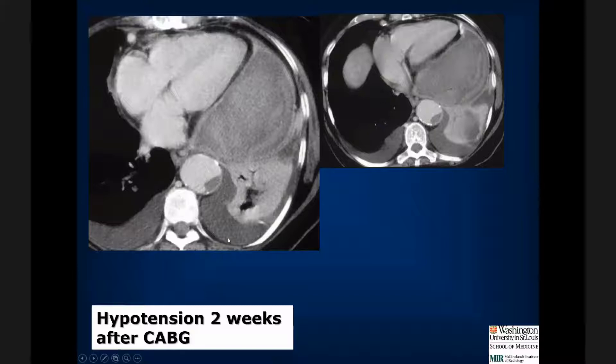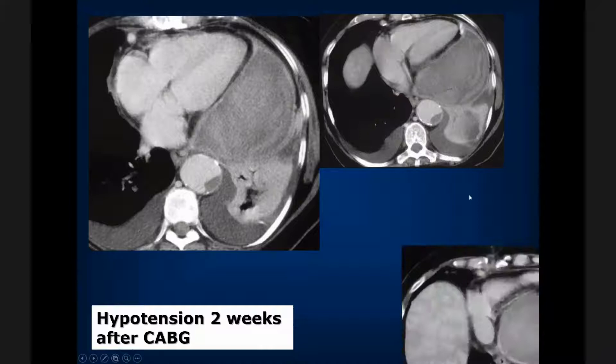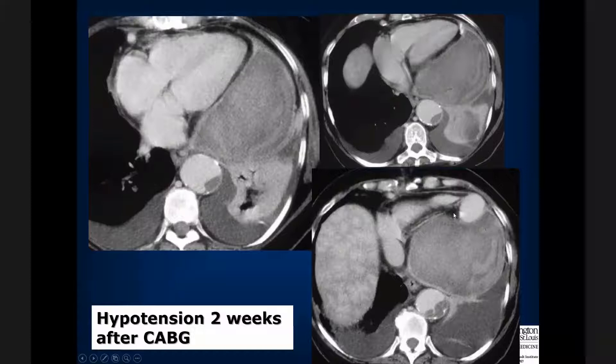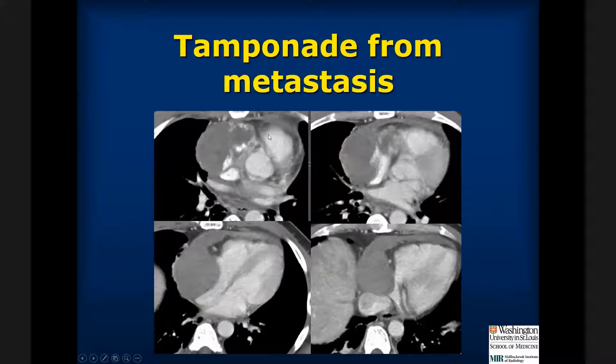Another patient status post CABG went home, was doing okay, and came back two weeks later with hypotension. There is a loculated collection posteriorly with enhancement of the pericardium. Looking closely at the level of the anastomosis, there is a pseudoaneurysm that was bleeding into the pericardial sac posteriorly and pushing the ventricle out of the way. You can also see hepatic stasis.